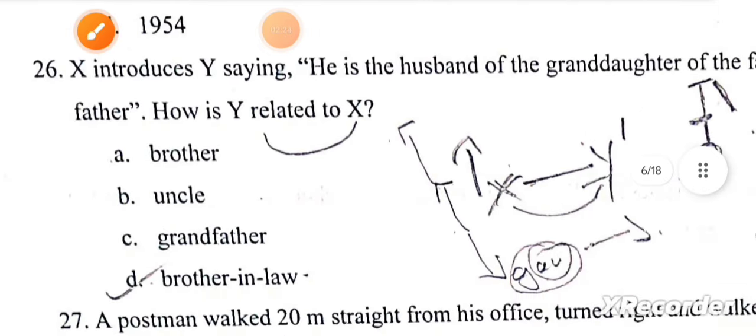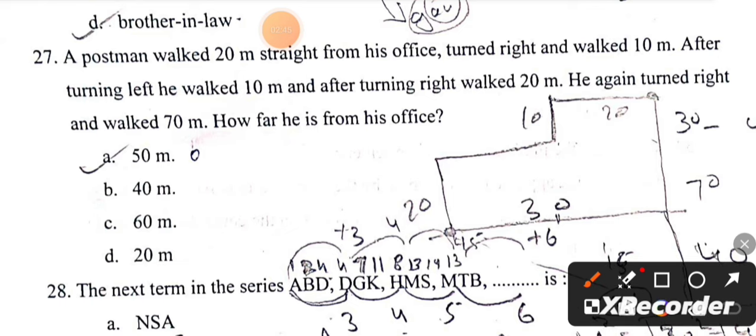Next, a postman walked 20 meters straight from the office, turned right and walked 10 meters. After turning left, he walked 10 meters again. How far is he from his office? The answer is 50 meters.